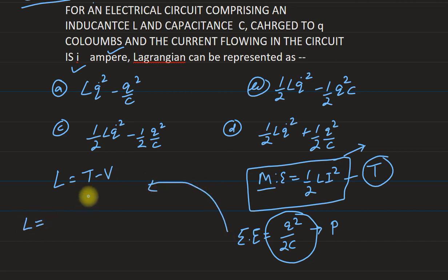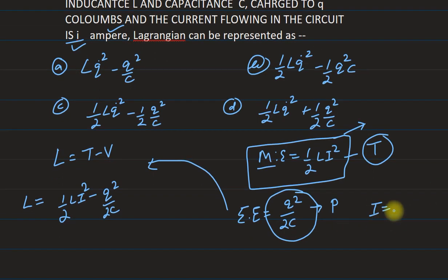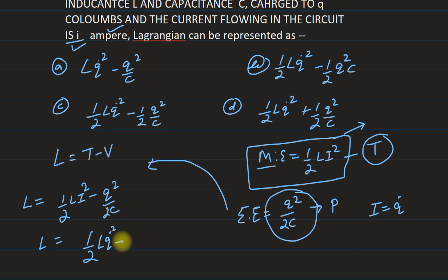We write the expression for the Lagrangian: L = T minus V. In place of T we write half LI squared, and in place of V we write q squared by 2C. The problem gives charge Q coulombs and current I. Since we know that I = dq/dt, we can write I = q̇.